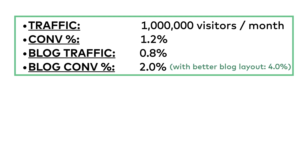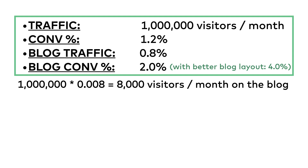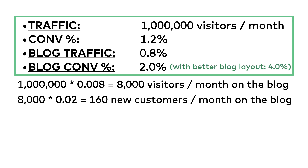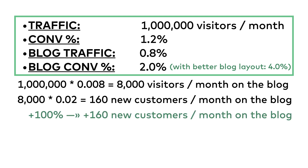The conversion rate of new visitors who also visited the blog is 2%. Let's say you know for a fact the blog plays a real role in that higher conversion rate, and you have a hypothesis that with a better blog layout you could even double this conversion number. You have 1 million new visitors per month, and 0.8% of them visit the blog — that's 8,000 users every month. At 2% conversion, that's 160 new customers per month. Doubling that would add another 160 new customers.